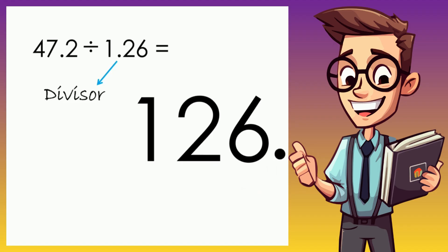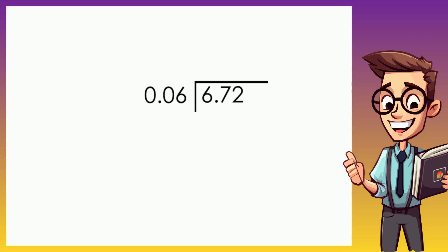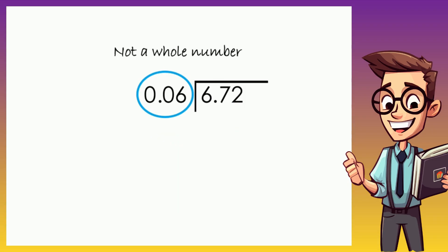Now let's start dividing. Let's divide 6.72 by 0.06. To divide these decimals, let's change it to long division. Remember to put the dividend inside the division symbol and the divisor outside. As mentioned earlier, you cannot divide decimals if the divisor is not a whole number, so we must move the decimal point.